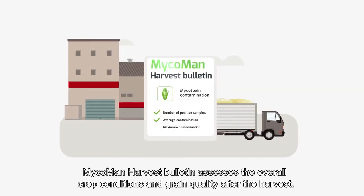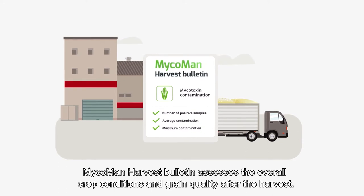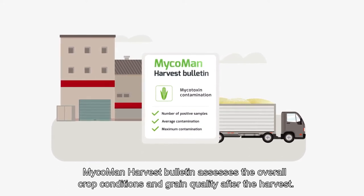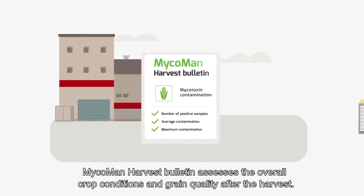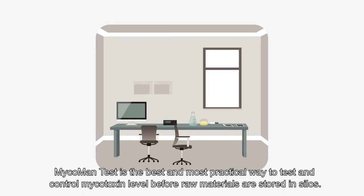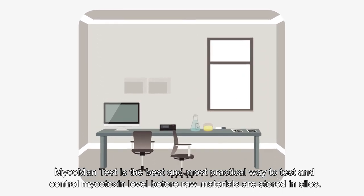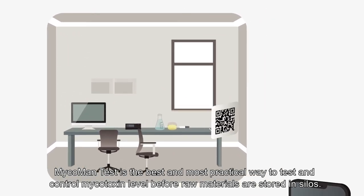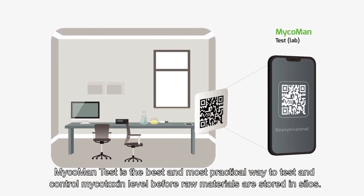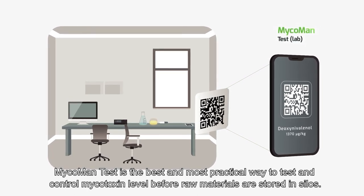Mycoman Harvest Bulletin assesses the overall crop conditions and grain quality after the harvest. Mycoman Test is the best and most practical way to test and control mycotoxin levels before raw materials are stored in silos.